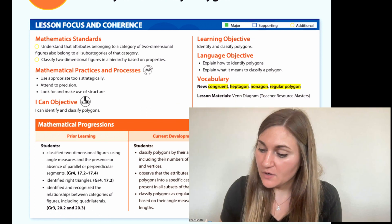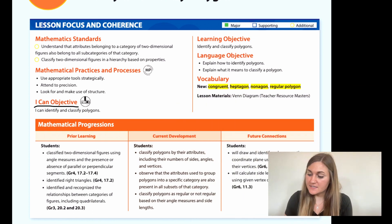Hi, I'm Natalie Rhodes and this is Into Maths 5th grade, Module 20, Lesson 1. I'm going to start off by going over the I can objective. It says I can identify and classify polygons. The learning objective is to identify and classify polygons. The prior learning is that students classified two-dimensional figures using angle measures and the presence or absence of parallel or perpendicular segments. Students identified right triangles and recognized the relationships between categories of figures, including quadrilaterals.